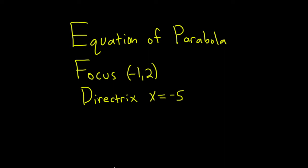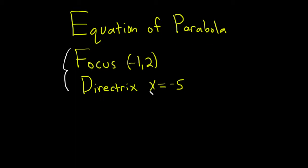Hi, in this problem we're going to try to find the equation of a parabola. We're told the focus is negative 1 comma 2 and the directrix is x equals negative 5.